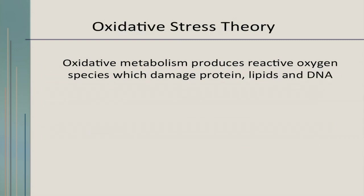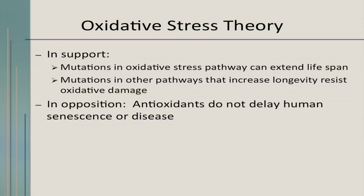The oxidative stress theory holds that oxidative metabolism produces reactive oxygen that can damage protein, lipids, and DNA. It seems a solid theory because there are clear mutations in oxidative stress pathways that can extend life, and other mutations that increase longevity. However, giving people antioxidants doesn't seem to really delay aging and disease. Although mutations in oxidative stress pathways are observed, we have yet to demonstrate that reversing or upregulating them makes any difference.